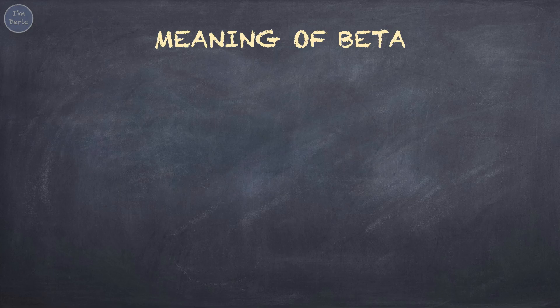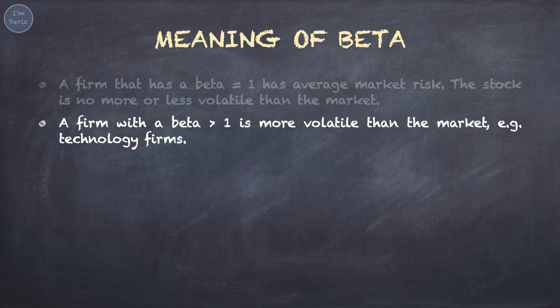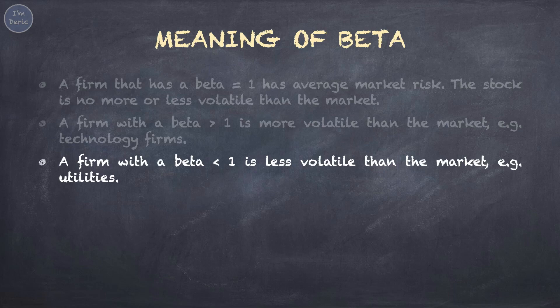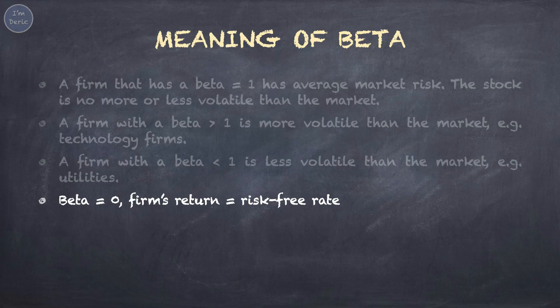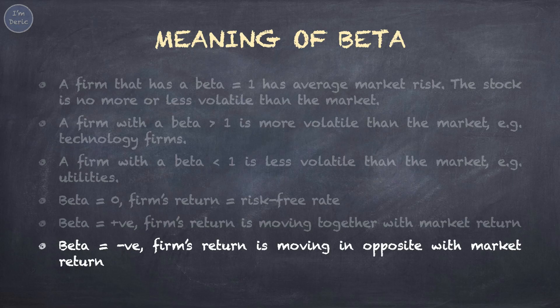The following are the meanings of beta. A firm with a beta equal to 1 has average market risk — the stock is no more or less volatile than the market. Volatile means risky. A firm with a beta greater than 1 is more volatile than the market, for example, technology firms. A firm with a beta smaller than 1 is less volatile than the market, for example, utilities. When beta equals 0, the firm's return equals the risk-free rate. When beta is positive, the firm's return moves together with the market return. When beta is negative, the firm's return moves in the opposite direction to the market return.